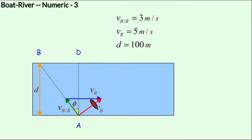Let's take the same example as in the previous lesson, but this time we decrease the speed of the boat with respect to the river to 3 meters per second, and we increase the river current to 5 meters per second.